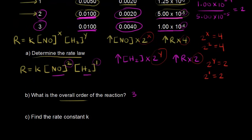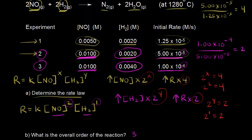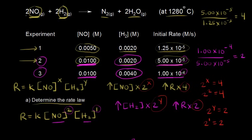Let's compare our exponents to the coefficients in the balanced equation. Students are tempted to say the coefficient of 2 for nitric oxide explains the exponent of 2 in the rate law — but hydrogen also has a coefficient of 2, yet its exponent is 1. You cannot take coefficients from a balanced equation and use them as exponents in the rate law; you must use experimental data. We'll discuss this more when we cover mechanisms.